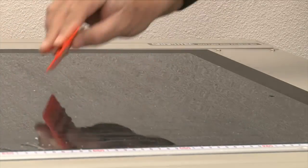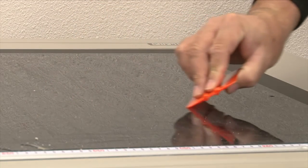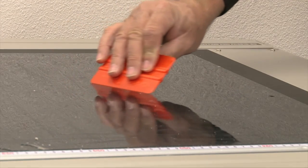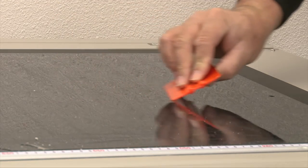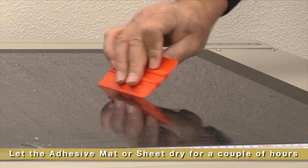Smooth it down once again by starting in the middle and then smoothing it outward with a plastic squeegee to remove as much water and bubbles from underneath the mat. Continue to smooth it down and let dry for a couple of hours.